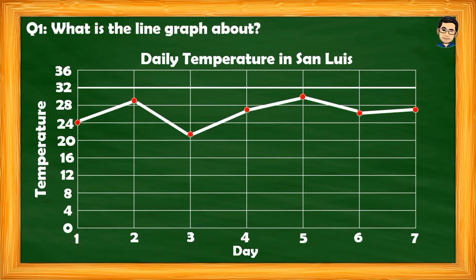Now let us answer the questions. For the first question: what is the line graph about? The line graph is about the daily temperature recorded for the past seven days in San Luis.